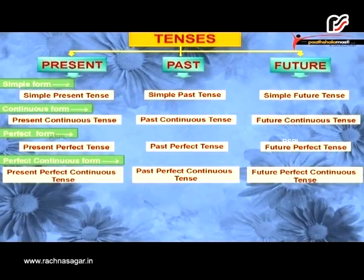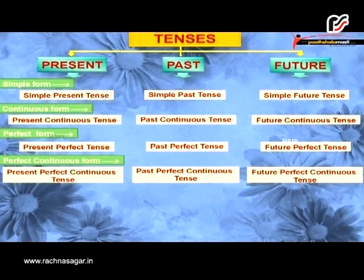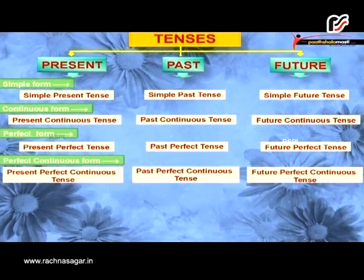Tenses are divided into three parts — all of us are aware about that — present, past, and future. And further they are divided into four forms. Let me explain you those forms.